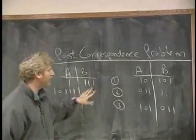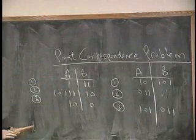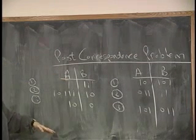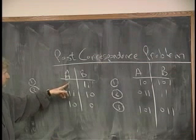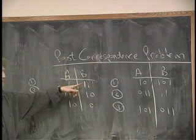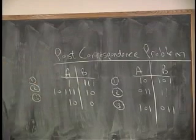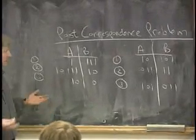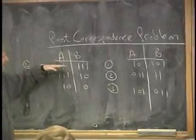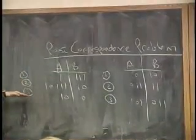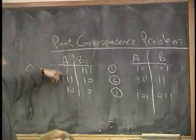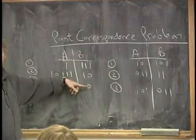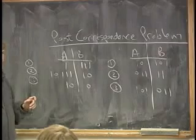Let's look at this problem so everybody knows what it is. Here's what you get in the post-correspondence problem. You get a list of strings that come in pairs - one from column A, one from column B. The list can be very long. In this case, I just made a list of three, but it's arbitrarily long. And you're given this list, and the question is, can you take a sequence of these numbers so that when you connect all the A's in that sequence, you get the same string as when you connect the B's in that sequence.